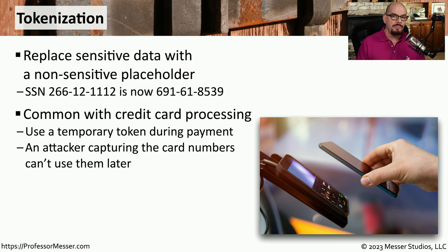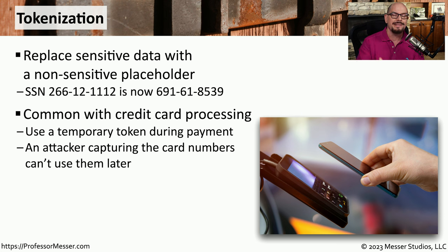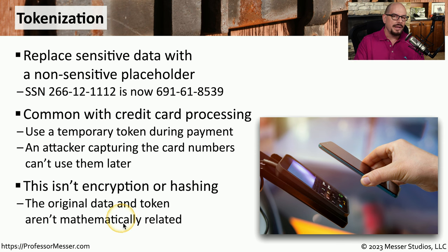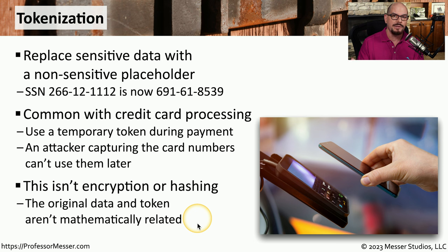This is the same process that occurs when you pay for items at the store with your mobile phone or smartwatch. A temporary token is created from your credit card number, and that token is what's sent across the network. This is a one-time use token, which means if somebody captures it during the transfer and tries to use it again, the token will be denied because it can only be used once. This means we can transfer this data across the network without needing to encrypt any of it. Since it has no mathematical relationship back to your credit card number, it's completely safe to send across the network.